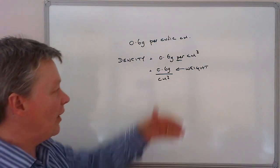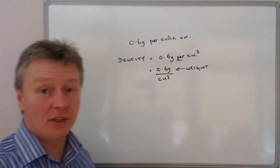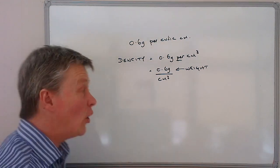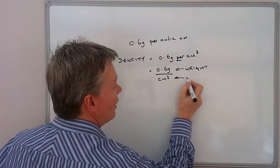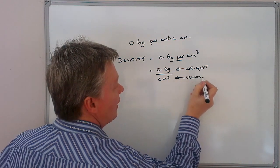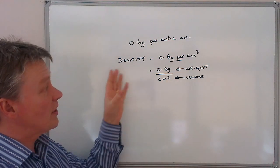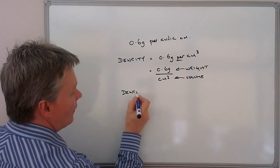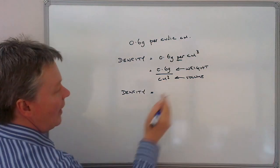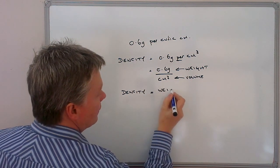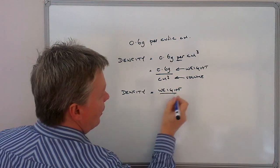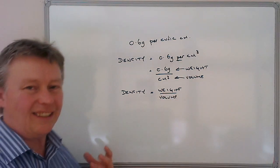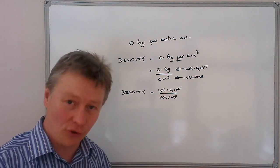And if we look at the bottom, centimeters cubed is a measurement of volume. So this is my volume measurement here. Now what we could say then is density equals weight divided by volume. And there we are. And to a certain extent yes, that's true.